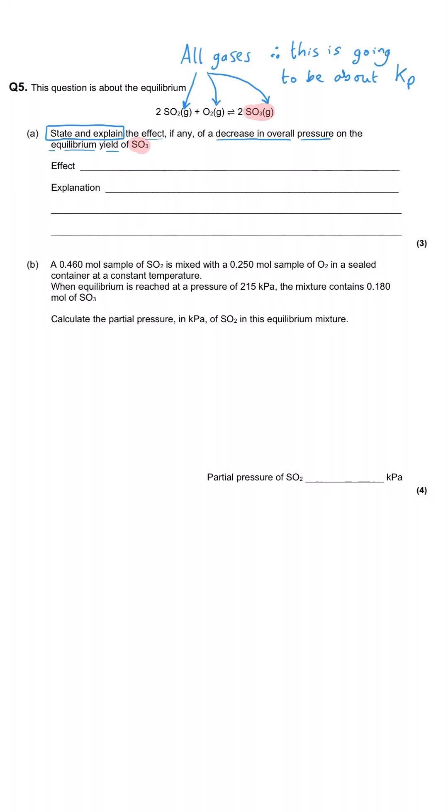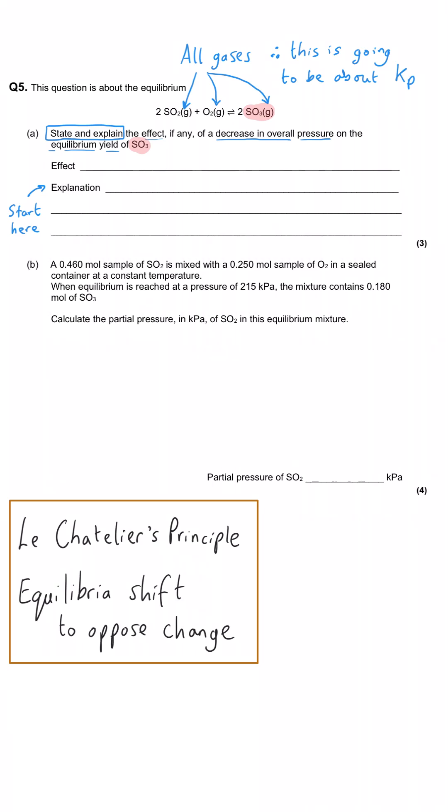This is a really common question, and I actually feel that it's easier to tackle the explanation part and arrive at the effect once you're happy with your explanation. And so obviously this is to do with Le Chatelier's principle, which covers the idea that the equilibrium is going to shift to oppose the applied change. And since we're decreasing the overall pressure, the equilibrium is going to shift to increase the pressure, and that will be the first explanation mark.